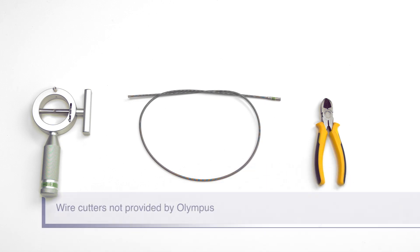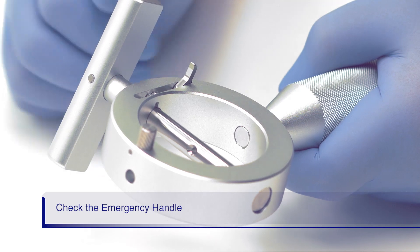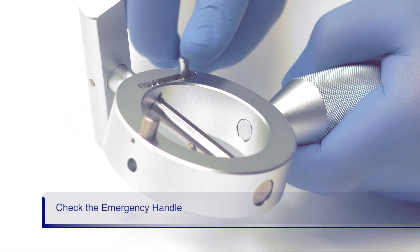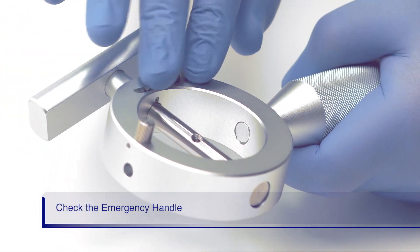The wire cutters need to be of good quality. Bandage scissors will not work. Before using the emergency lithotriptor handle, ensure that the rotatable bar can freely turn and confirm the ratchet lock works by engaging and disengaging it at the handle bar.